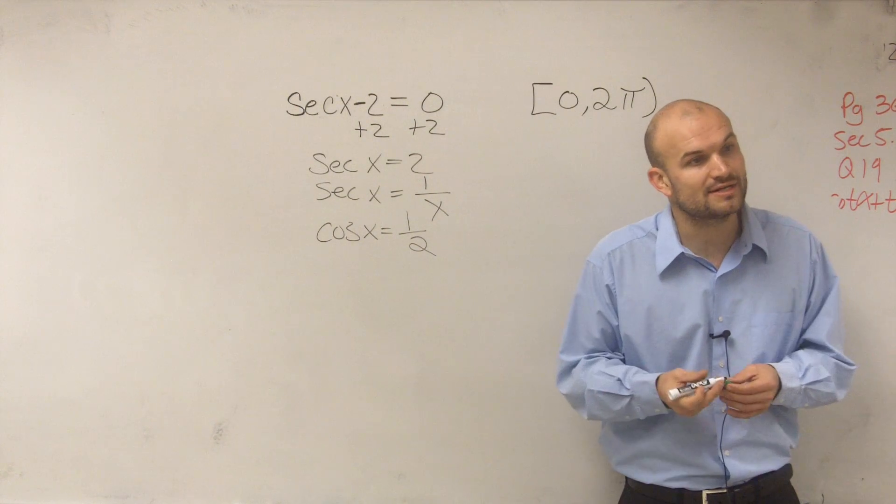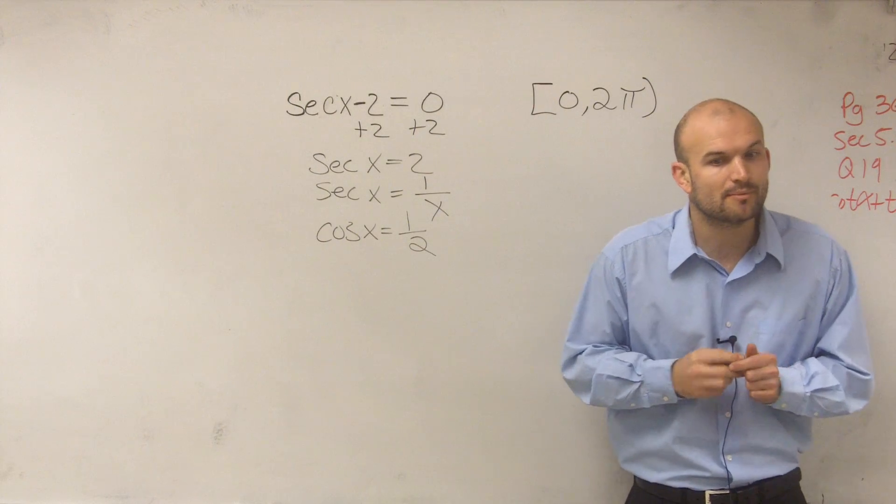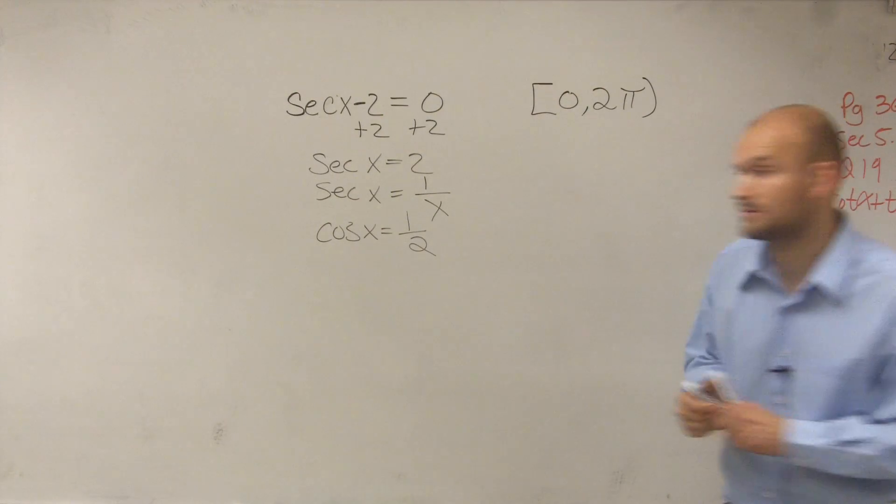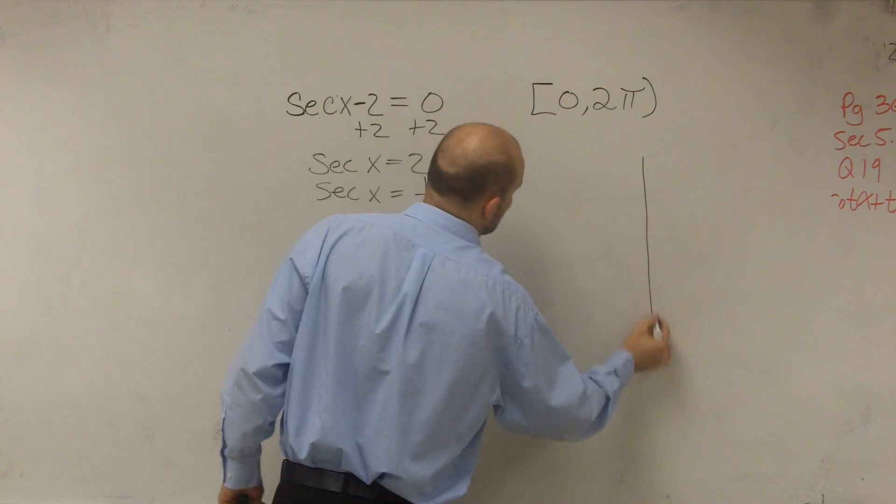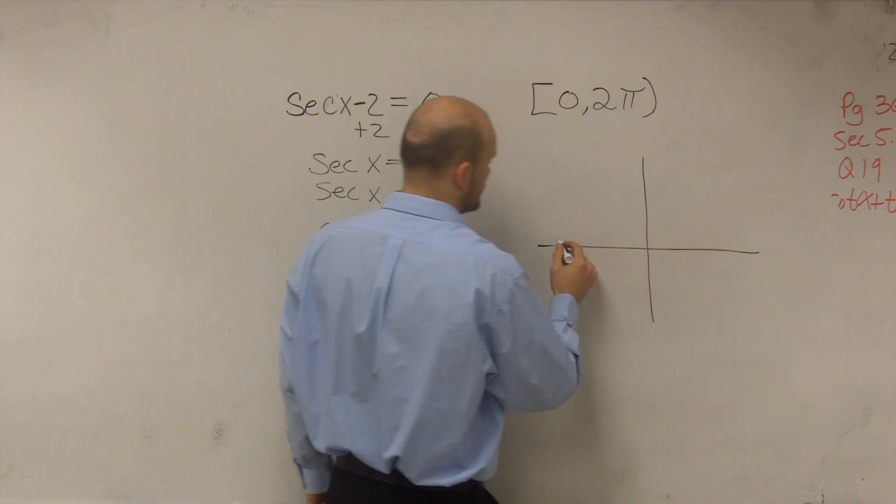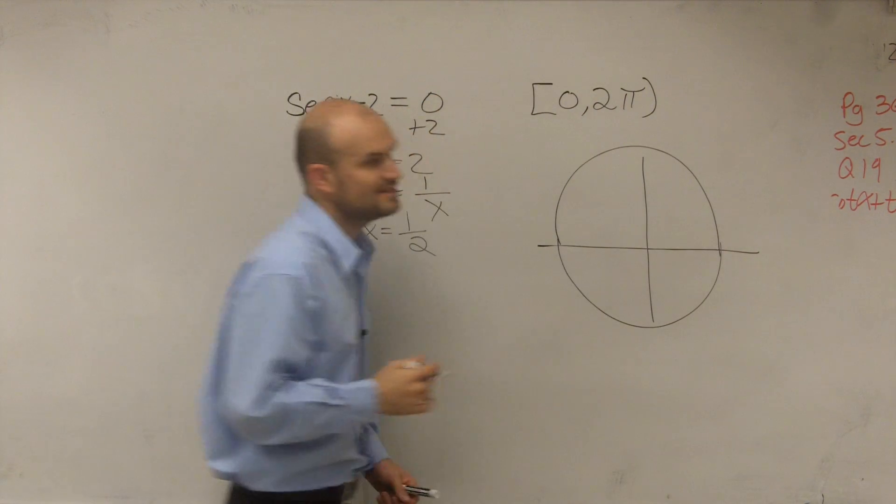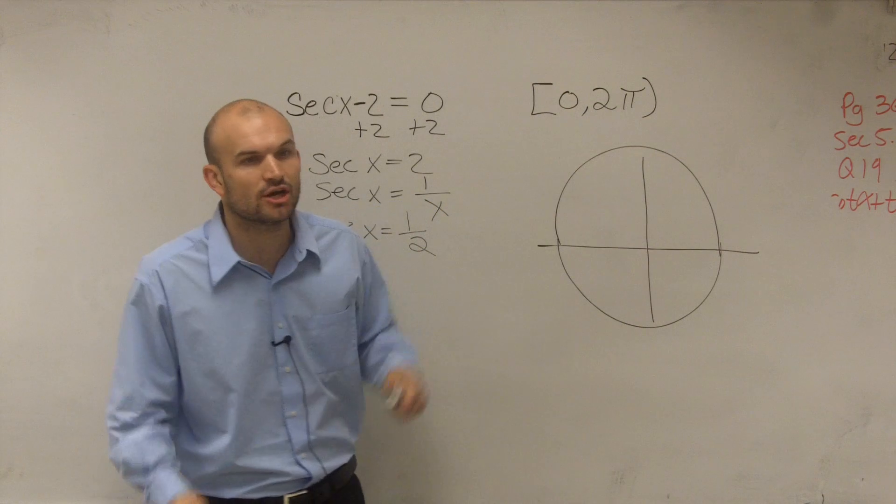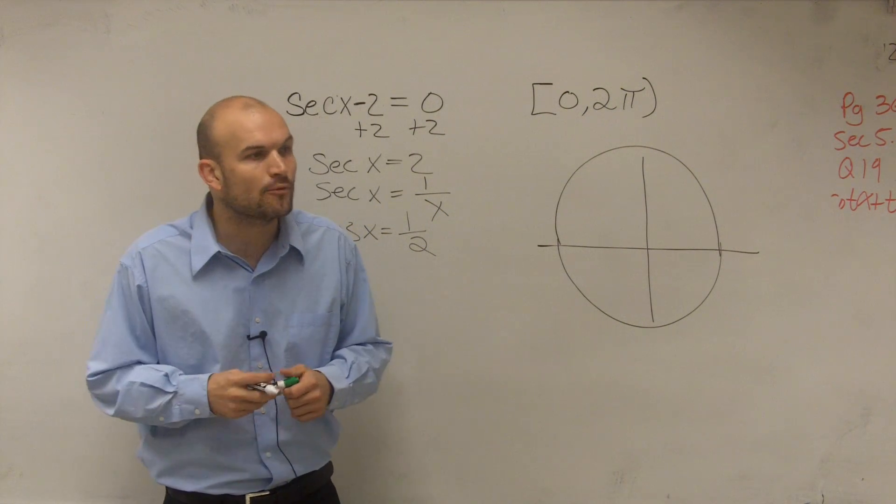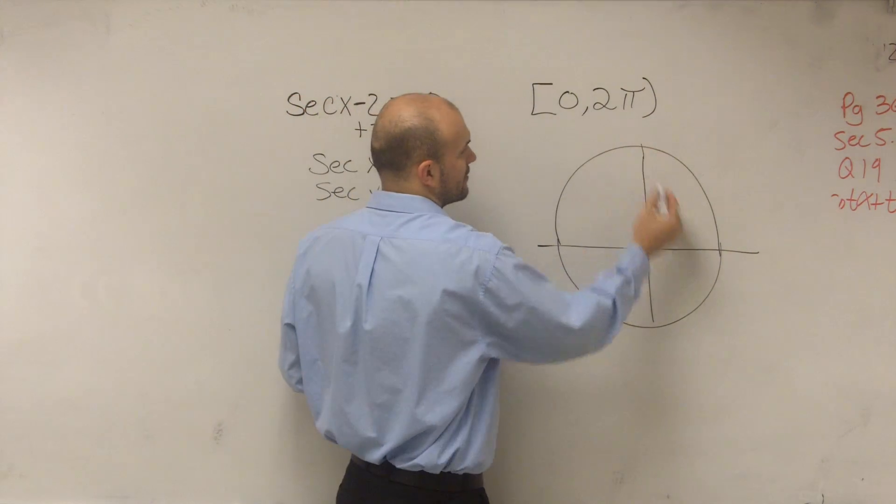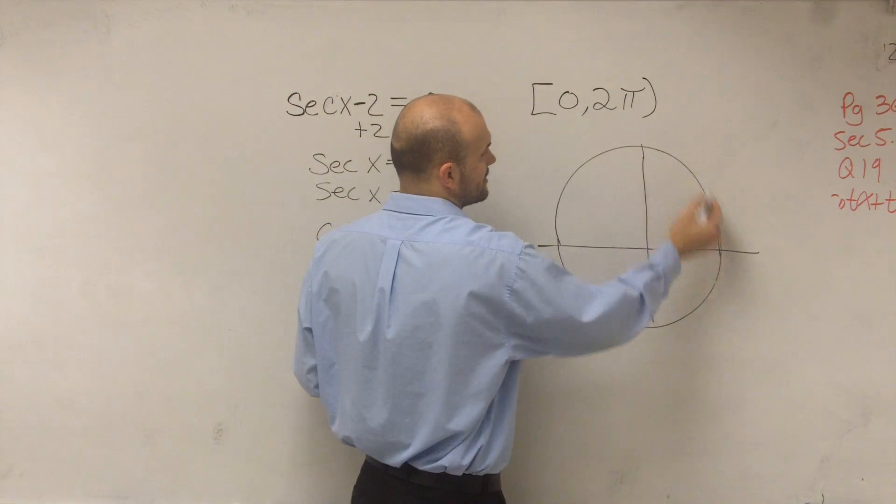So now we just need to remember our unit circle and when the cosine of x equals 1/2. Going back to our unit circle, on the interval of 0 to 2π, we need to identify when the cosine equals 1/2. It's going to be equal to 1/2 at two different points.